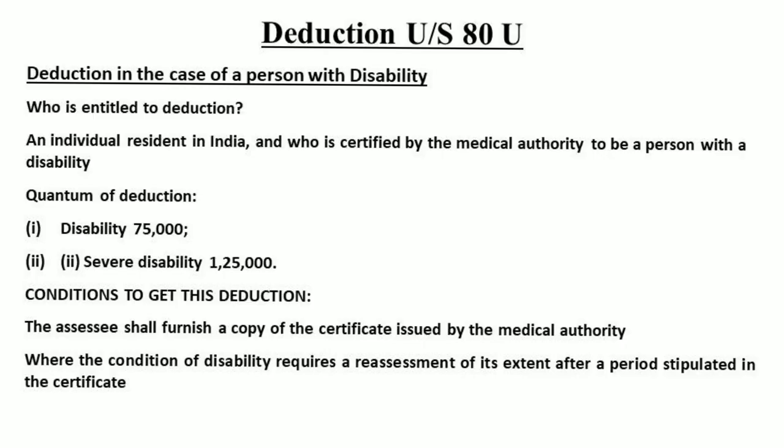Last deduction under Section 80U — deduction in case of a person with a disability. An individual resident in India who is certified by the medical authority to be a person with a disability. If the assessee himself is a disabled person, then how much deduction can he claim? Normally, for disability, seventy-five thousand rupees can be claimed.